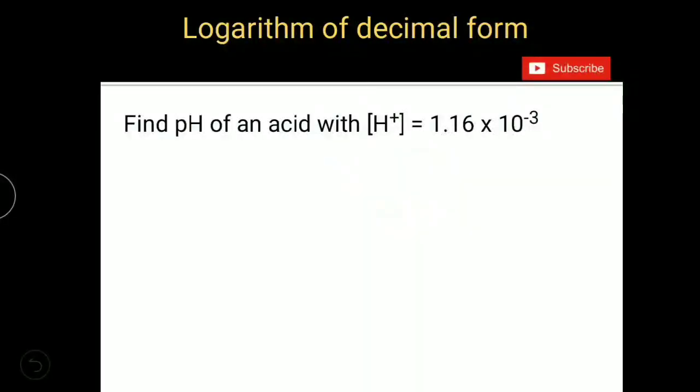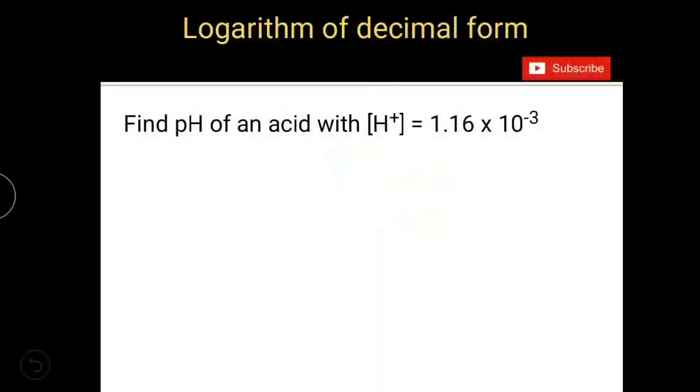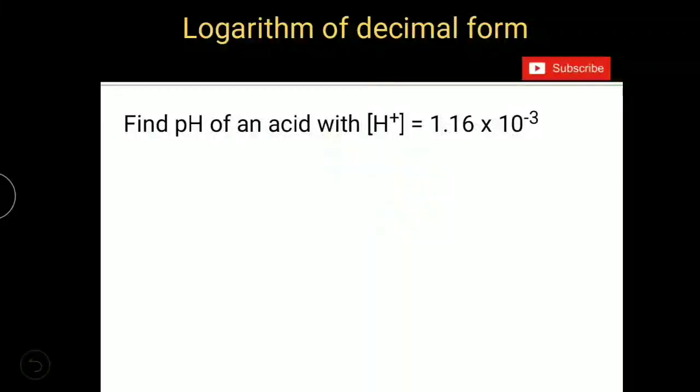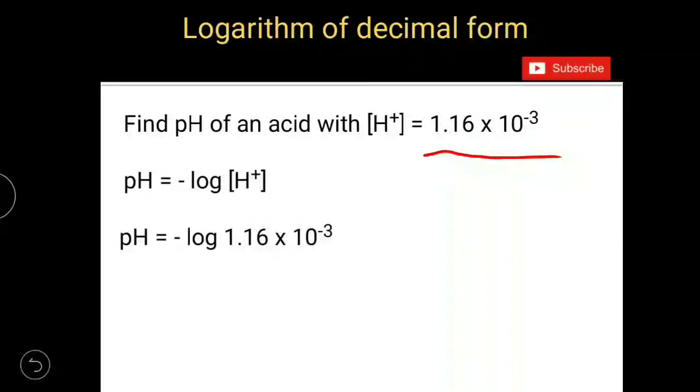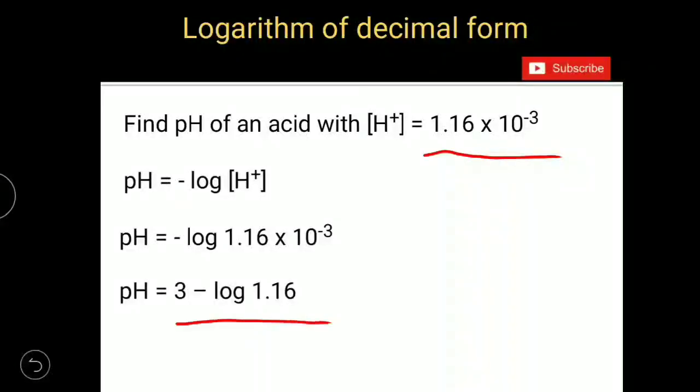We will see one more question on this. Find the pH of an acid with H plus ion concentration equal to 1.16 into 10 power minus 3. pH of a solution can be determined by using formula pH equals minus log H plus ion concentration. And this 1.16 into 10 power minus 3, when substituted, you will get minus log 1.16 into 10 power minus 3. And this can be written as 3 minus log 1.16.